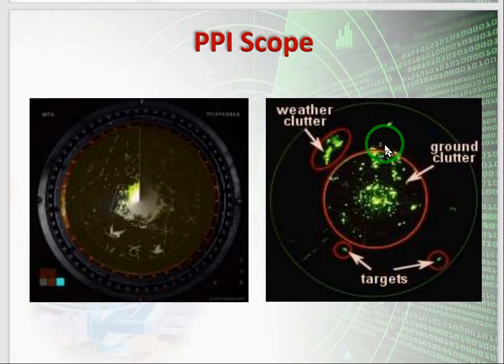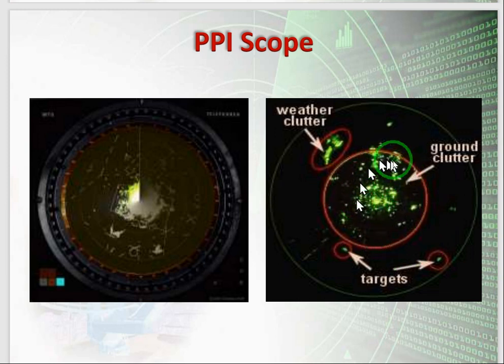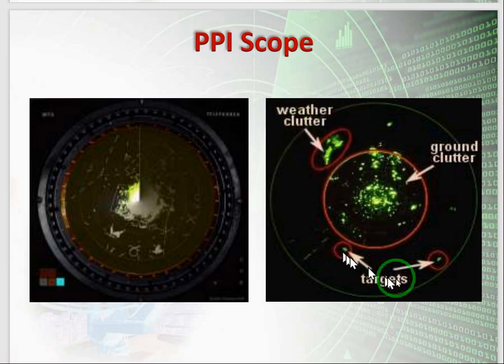The PPI scope is the radar viewing screen for the scanner. Here, clutters are identified. The big round area is the ground clutter, and these are the weather clutters — clouds and similar — while these others are our actual targets that are identified.